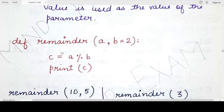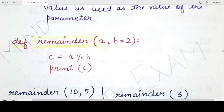Now how do we specify a default value? Suppose you have a function definition where I have written the def keyword in the function header, then I have named my function 'remainder' and specified two parameters a and b. To specify a default value, you need to write the equal-to sign and the default value in front of the parameter itself in the function header. So if you want to make b a default parameter, you put an equal-to sign and the value on the right-hand side in the function header itself.